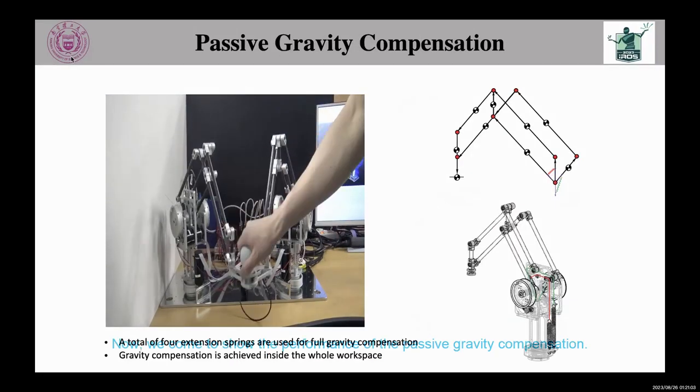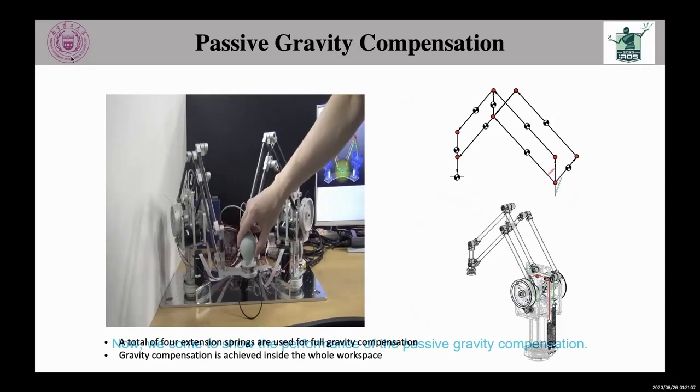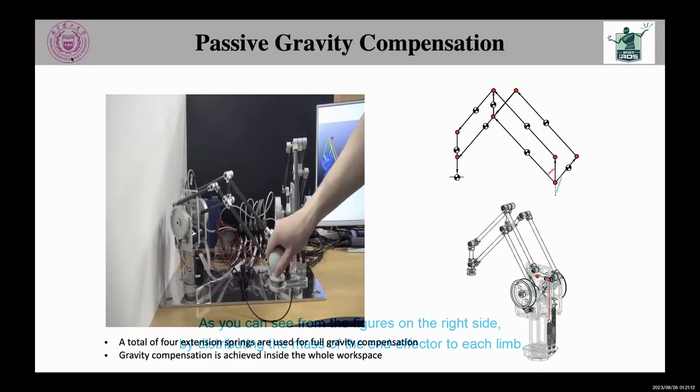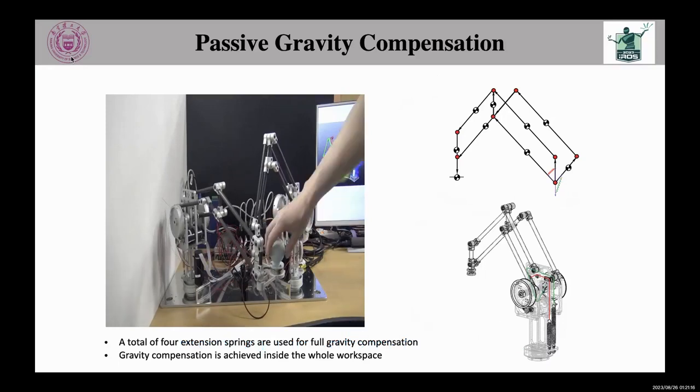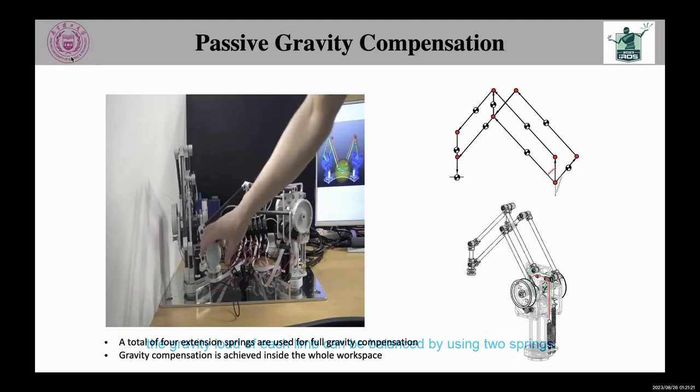Now we come to show the performance of the passive gravity compensation. As you can see from the figures on the right side, by distributing the mass of the end effector to each limb, the gravity load of each limb can be balanced by using two springs.